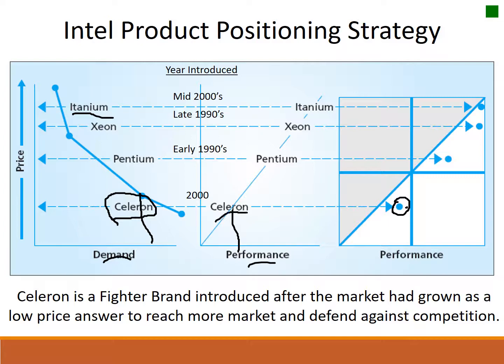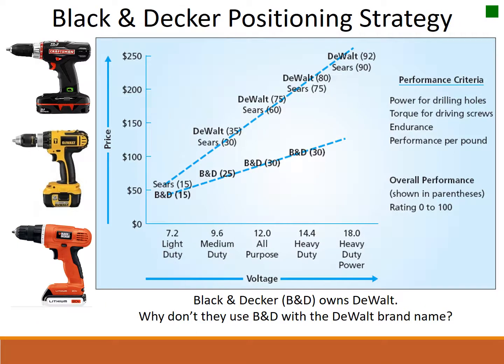The Celeron product is a fighter brand because it's intended to fend off competition from low-cost imitators trying to take market share. This is an example of how you use your products and think about how they play with each other, and how they provide you with a strategic advantage in the marketplace.